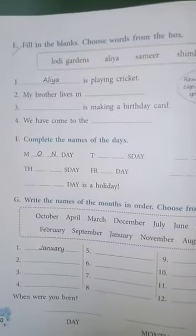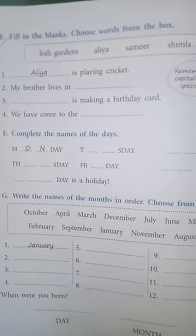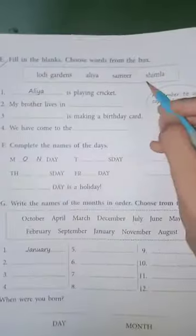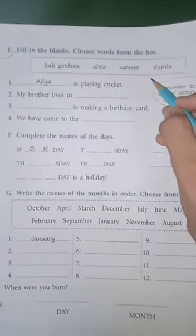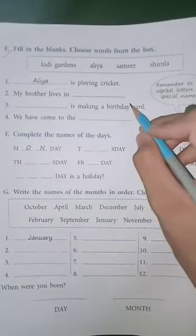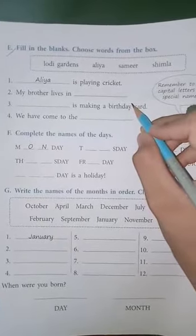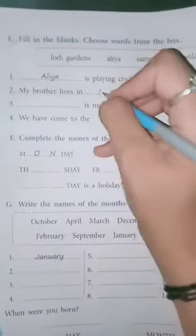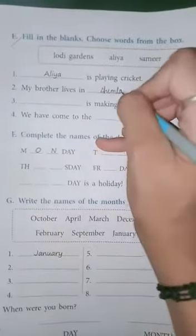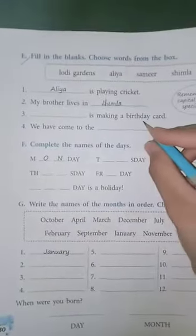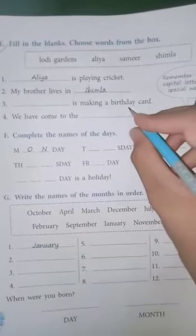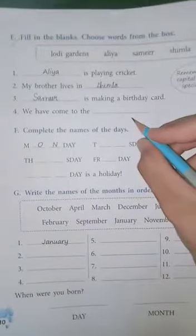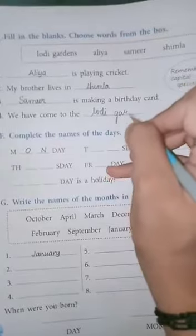Let's move on towards exercise E. Fill in the blanks — choose a word from the box. We have to use the words given in this box and fill the sentences. First one is done for us: dash is playing cricket — Alia. My brother lives in Shimla. Third one: Samir is making a birthday card. Fourth one: We have come to the Lodi Gardens. Is that clear?